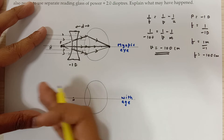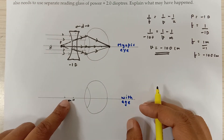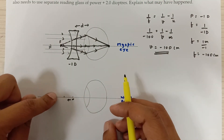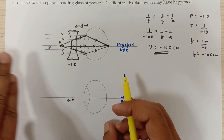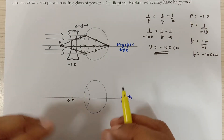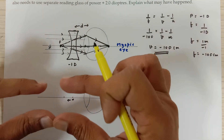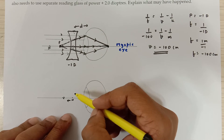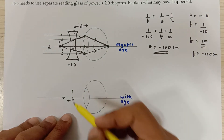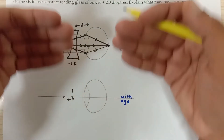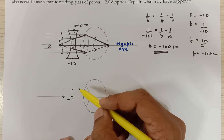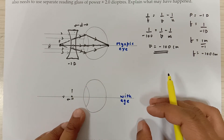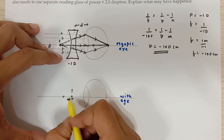But the problem is: as this person grows old, his near point, which was at 25 centimeters, has now shifted further away. He is not even able to read the newspaper at 25 centimeters — he has to hold it much farther. His near point has shifted back and his far point has also come forward, making his range of vision very narrow. He wants to read the newspaper by keeping it at 25 centimeters.